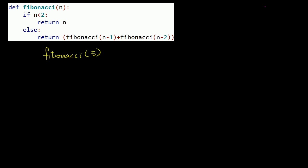In this situation, within the context of this function, the parameter n is going to be equal to 5. So in that first pass, n is equal to 5. The way we wrote it, we said if n is less than 2, return n. Well, 5 is definitely not less than 2, so we're going to go to the else clause and return Fibonacci of n minus 1 plus Fibonacci of n minus 2.